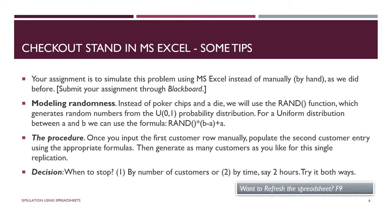The best approach in Excel is to input the first customer row manually — the first customer comes in at time zero, you generate the service time manually — and then in the second row apply the formulas based on the first row, then drag down to generate as many customers as you want. How do you know when to stop? The assignment asks you to do it two ways: a certain number of customers, and also for a certain amount of time such as two hours, five hours, or a full workday.